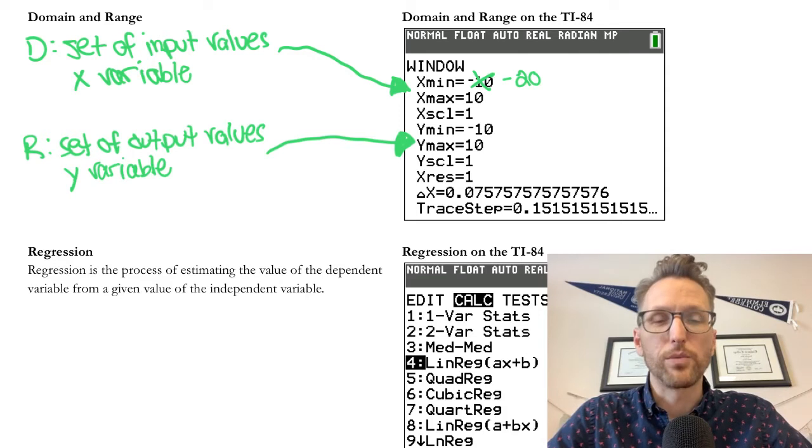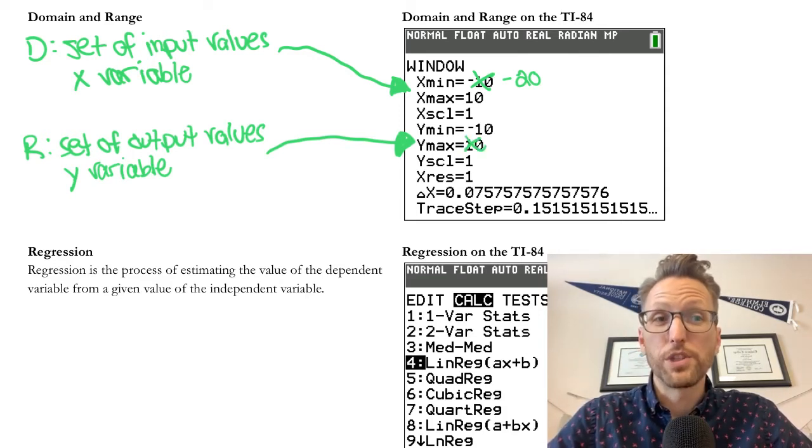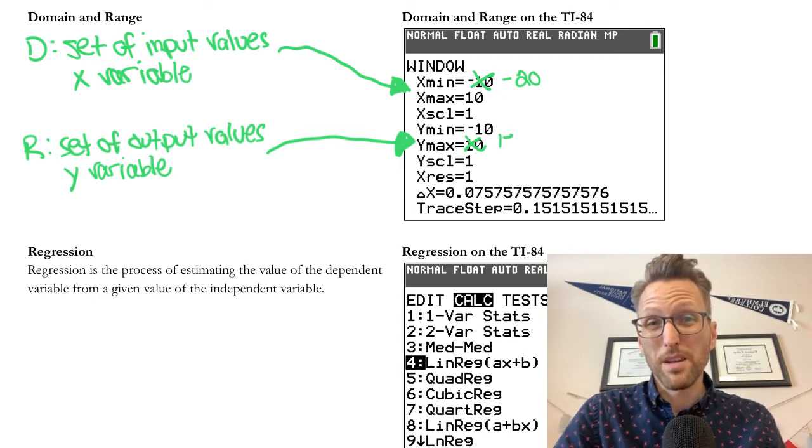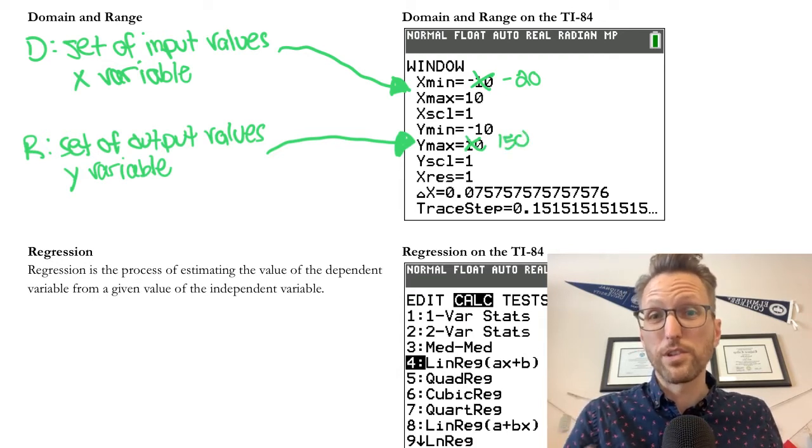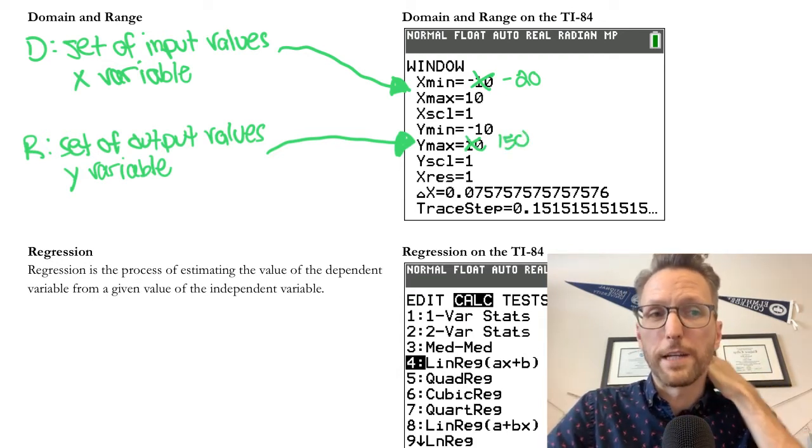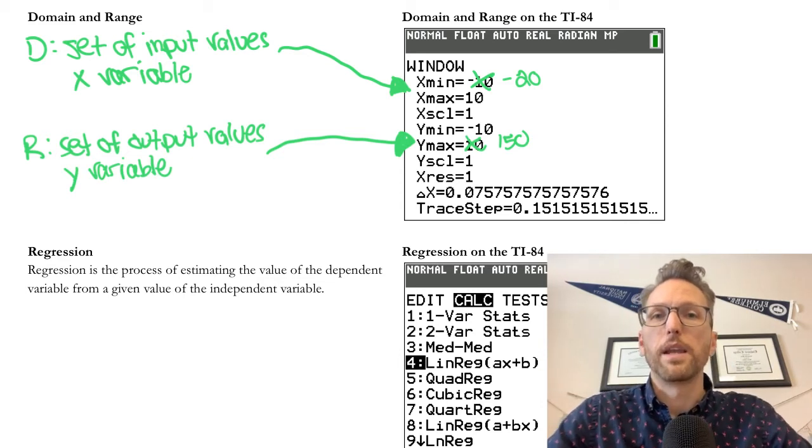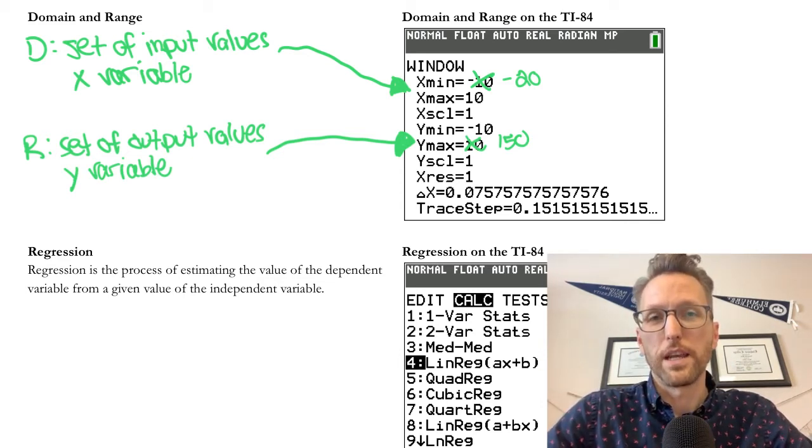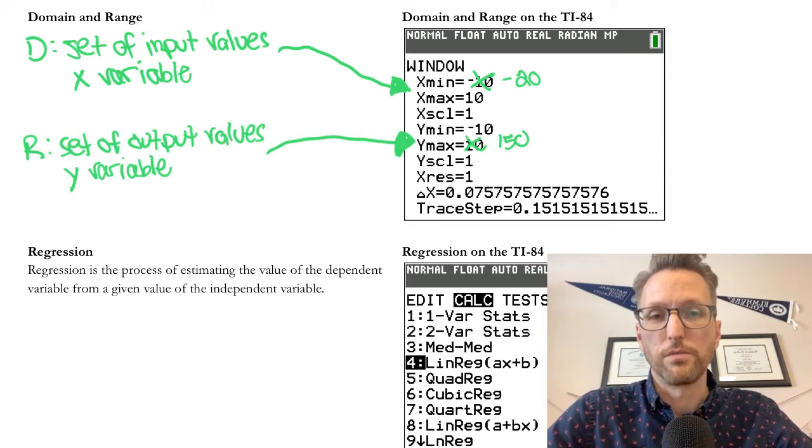But let's say that our y max was 147. Then we would change our y max to, well, maybe 150 or even 200 if we think we're going to find some other values. But not always can we include all of the data in the domain and range in our window. So we could just adjust that as we go.